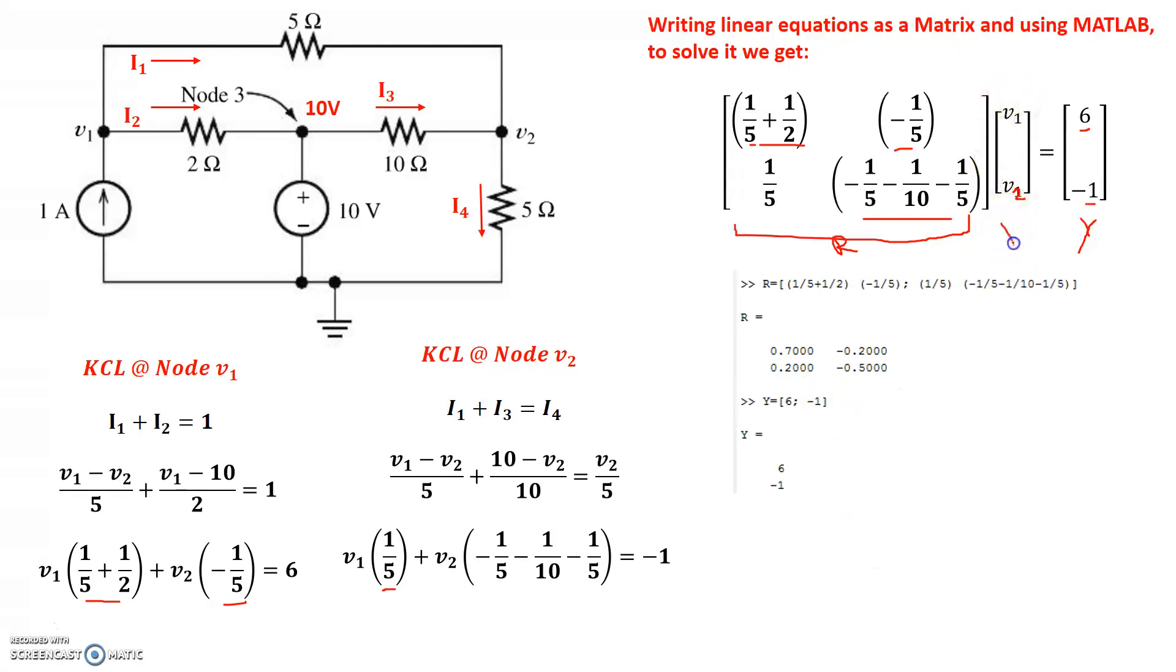Now in order to calculate V, we'll call this V matrix. V can be calculated by saying inverse of R times Y or alternatively we can say R backslash Y. And V is 10.3 and 6.12. So the first one is V1 and the second one is V2.